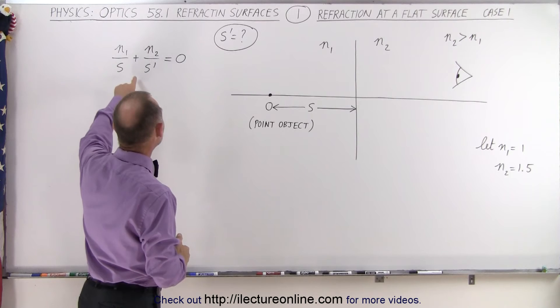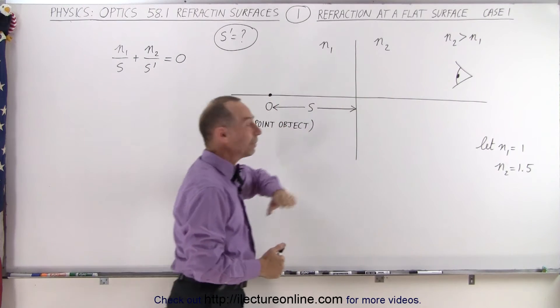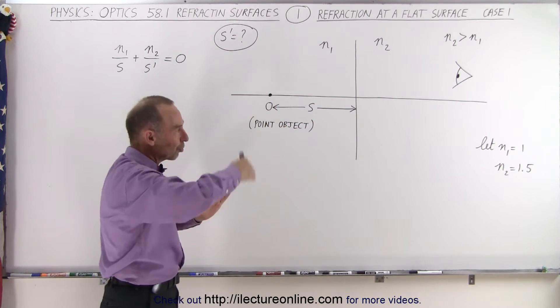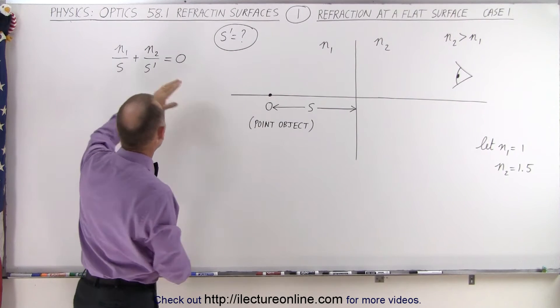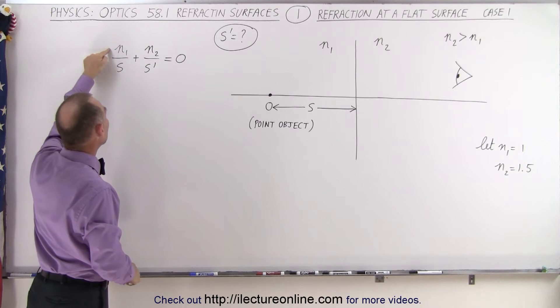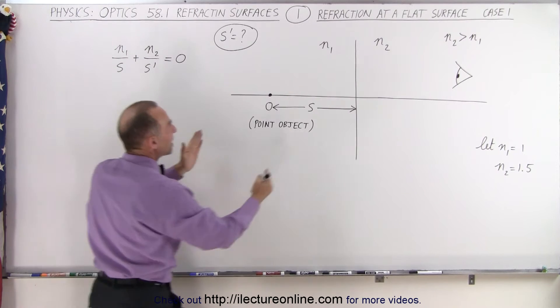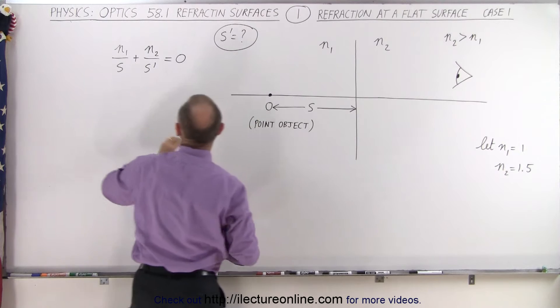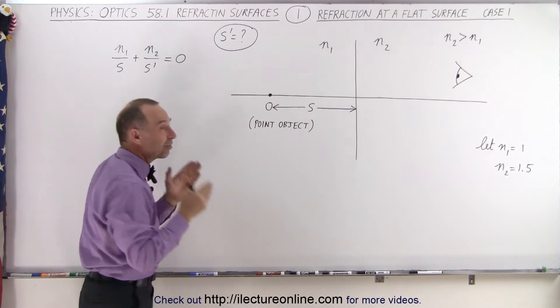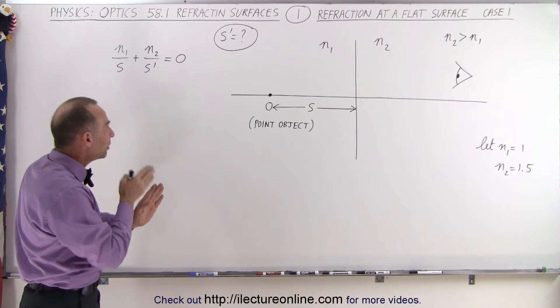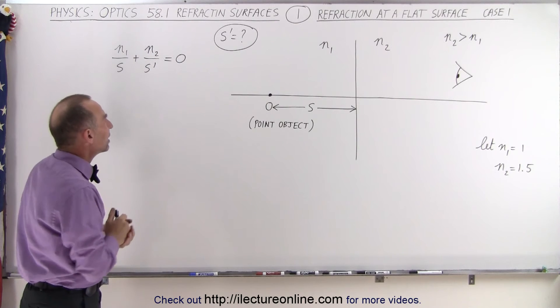Now we know that the equation for flat surfaces, because that means that the curvature radius is infinite, so on the right side equation we end up with zero. On the left side equation we end up with n1 divided by s, the distance from the boundary to the object, plus n2 divided by s prime, where s prime is the distance from the boundary to the image, and that has to equal zero.